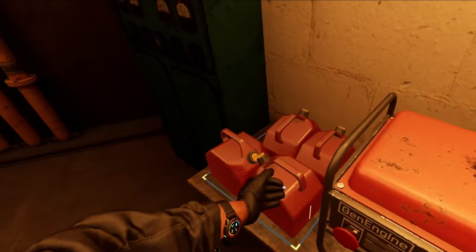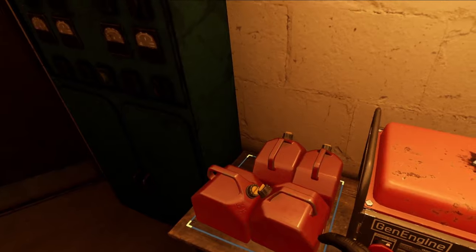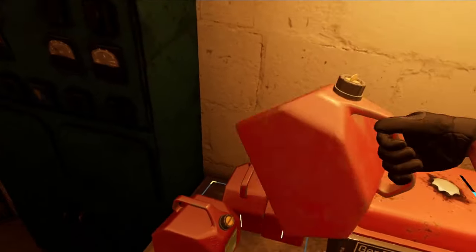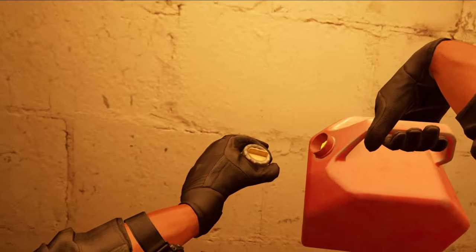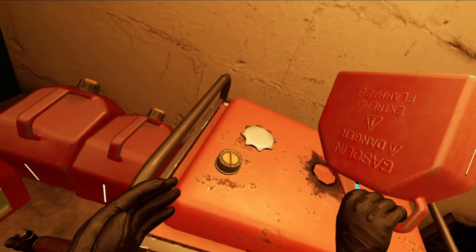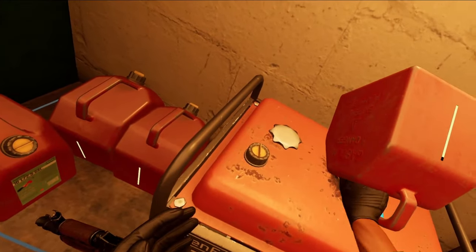You want to grab a gas can. I believe whenever you spawn in from the beginning of life, there should be one gas can there. So what you'll do is you'll take the gas can, you'll hold trigger, the cap will come off, hold grip, that'll come off, and you can just set it right on top and it'll pour in.